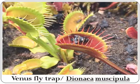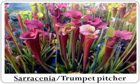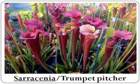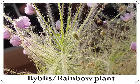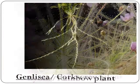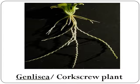Venus flytrap, Dionaea muscipula. Sarracenia, or the trumpet pitcher. Byblis, the rainbow plant. Genlisea, the corkscrew plant.